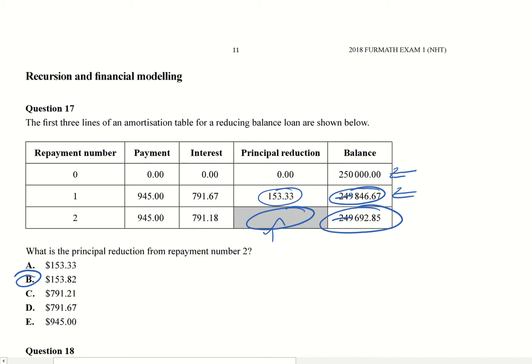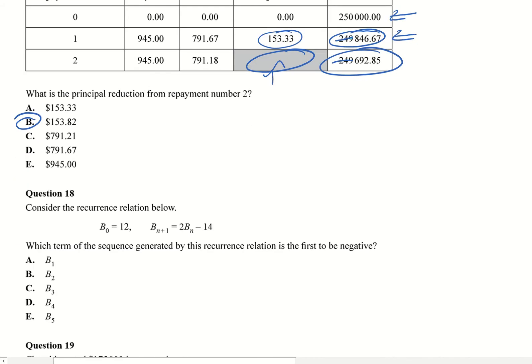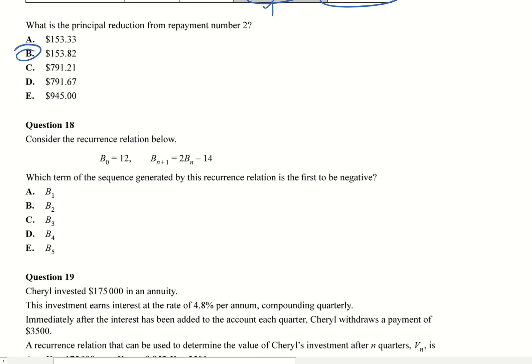Okay, so in this one here, consider the recurrence relation below. Which term of the sequence generated by this recurrence relation is the first to be negative?